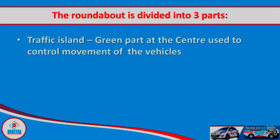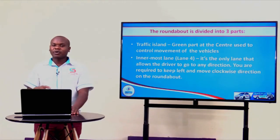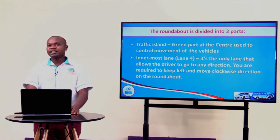A roundabout is divided into three parts. Most people think the roundabout is only the innermost lane, but a roundabout has three parts. The green part at the center used to control the movement of vehicles is called the traffic island. In our model town board, at the roundabout center you will see that landmass — that is what we call the traffic island, and it's our first part of the roundabout.